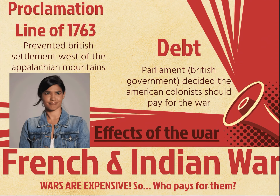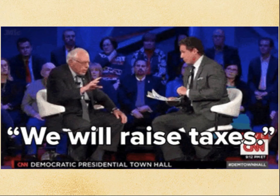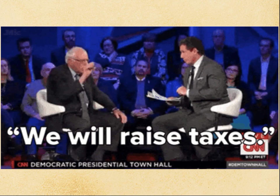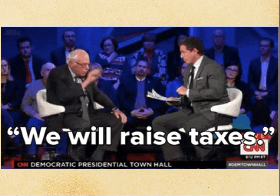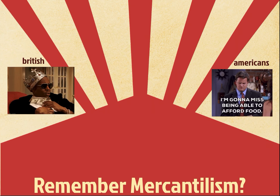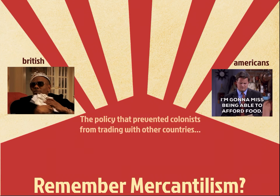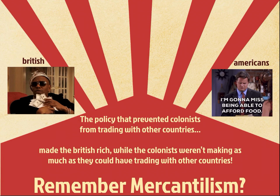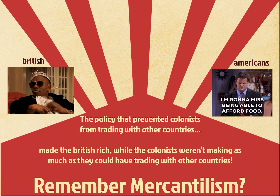The colonists are sitting here going, 'What money? We make the littlest amount of money out of everybody because of mercantilism.' So they're going to raise taxes. Mercantilism was the policy that prevented colonists from trading with other countries. It made the British rich while the colonists weren't making as much because they could be trading with other countries making more. So now they're not only making less money, they're having to pay more money in taxes to pay for the war.